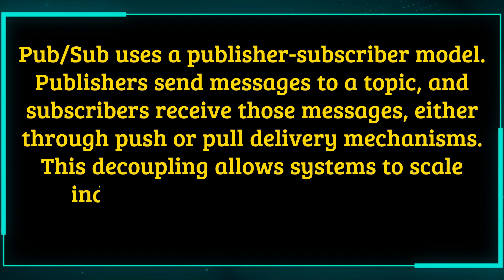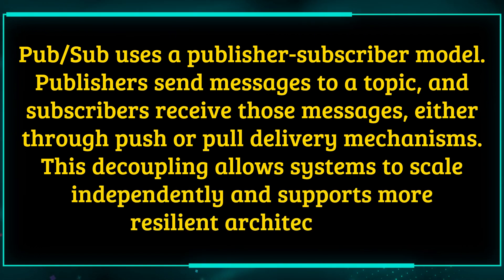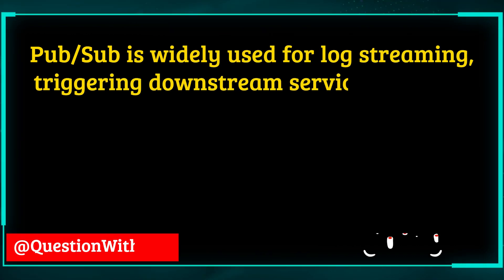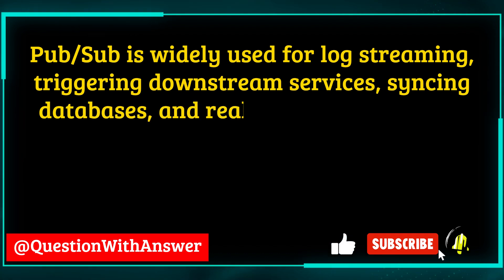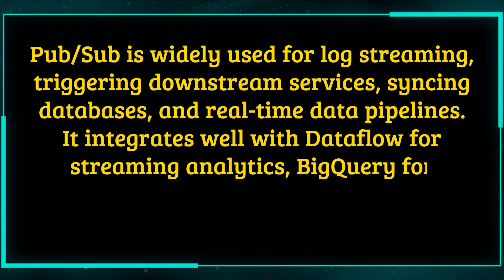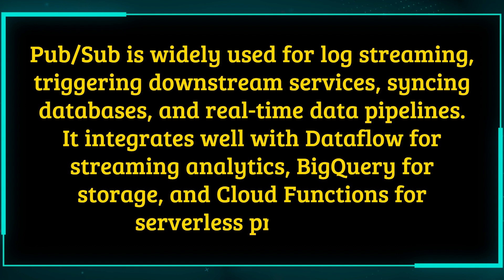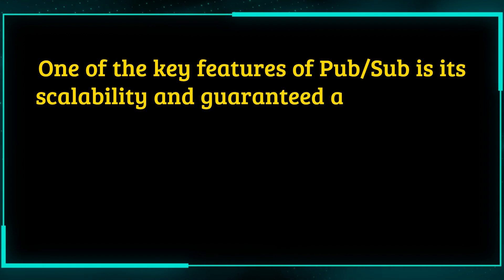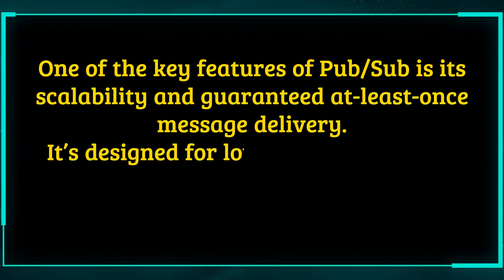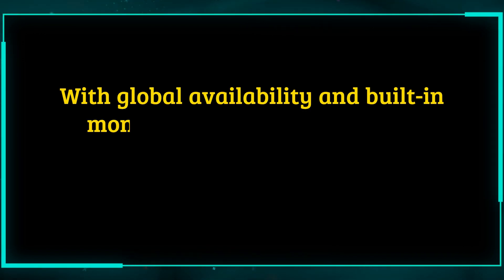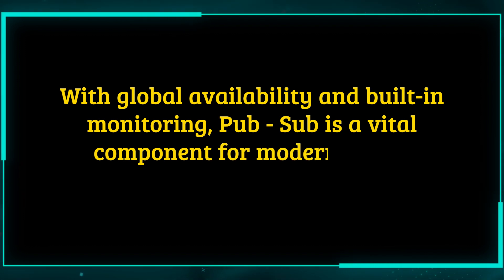This decoupling allows systems to scale independently and supports more resilient architectures. Pub/Sub is widely used for log streaming, triggering downstream services, syncing databases, and real-time data pipelines. It integrates well with Dataflow for streaming analytics, BigQuery for storage, and Cloud Functions for serverless processing. One of the key features of Pub/Sub is its scalability and guaranteed at-least-once message delivery. It's designed for low-latency and high-throughput messaging, making it ideal for large distributed systems. With global availability and built-in monitoring, Pub/Sub is a vital component for modern cloud-native applications.